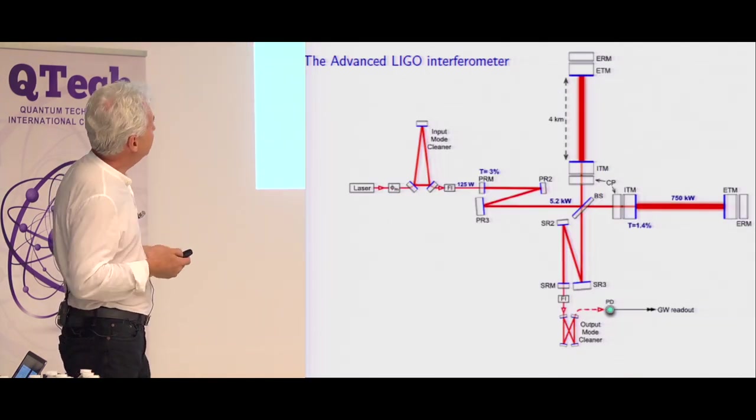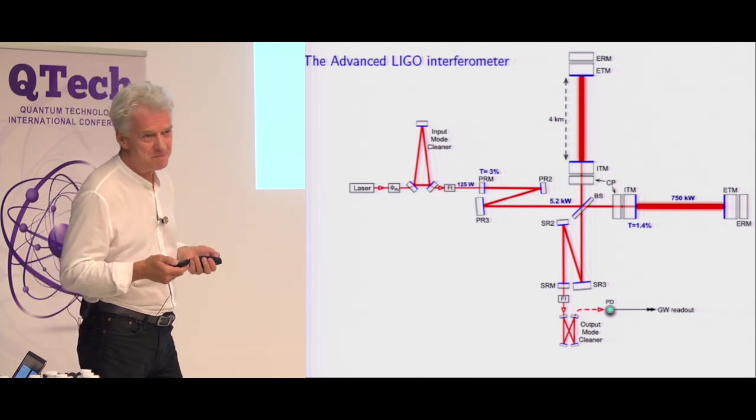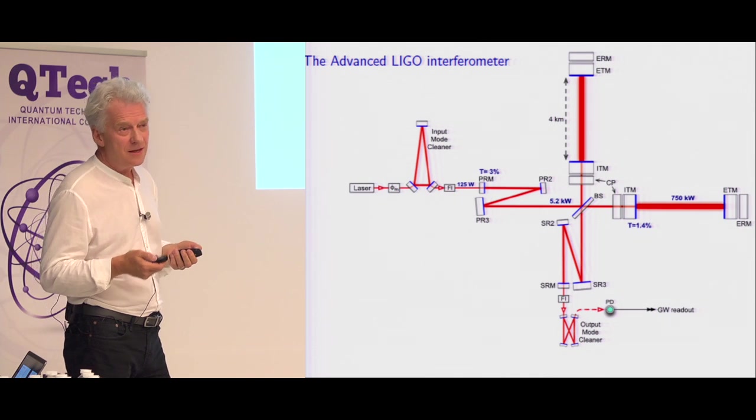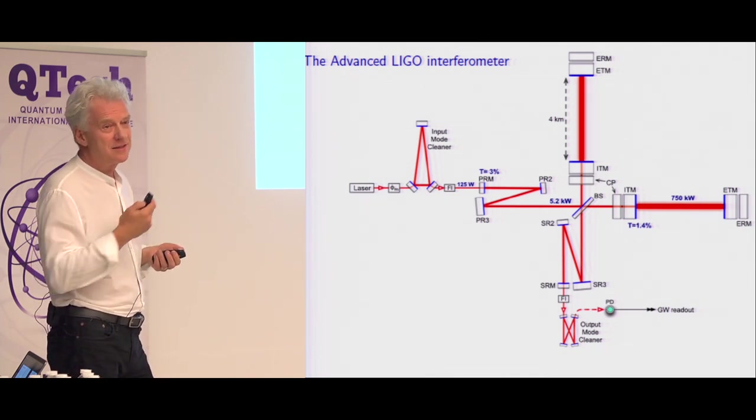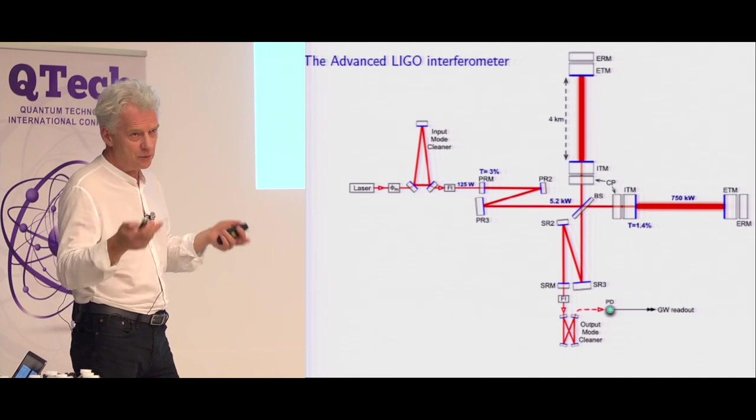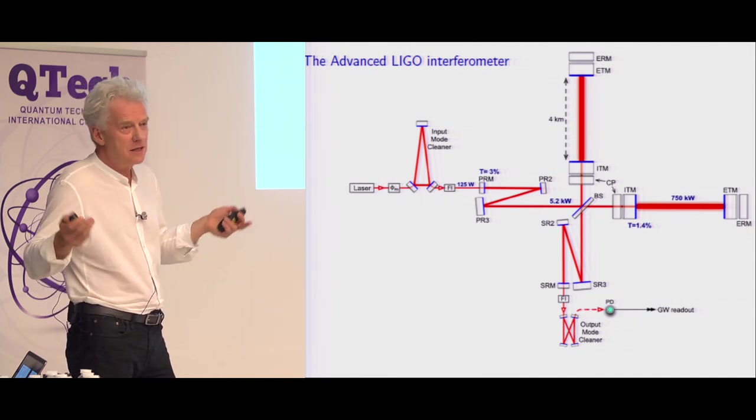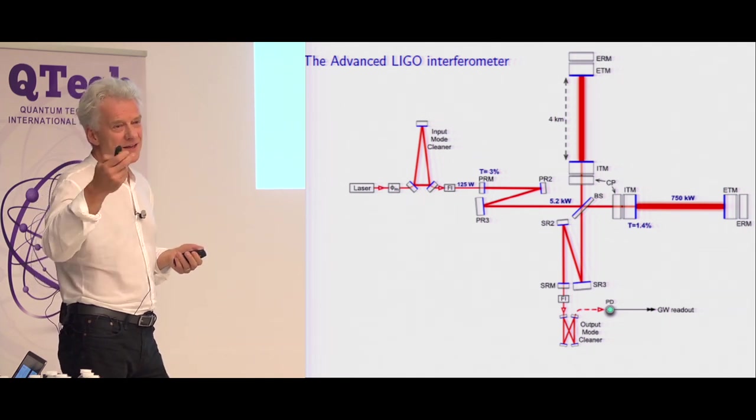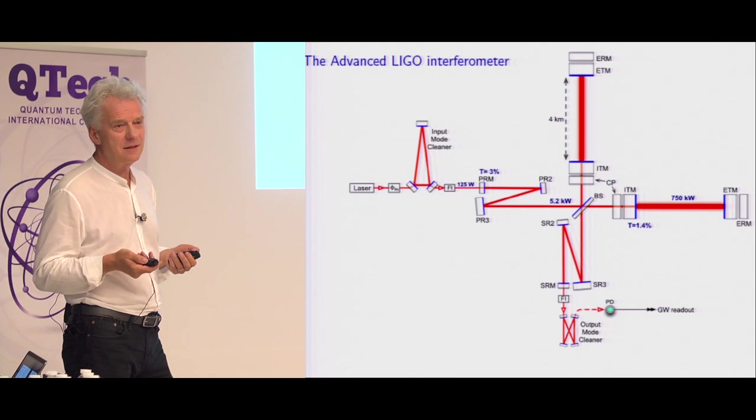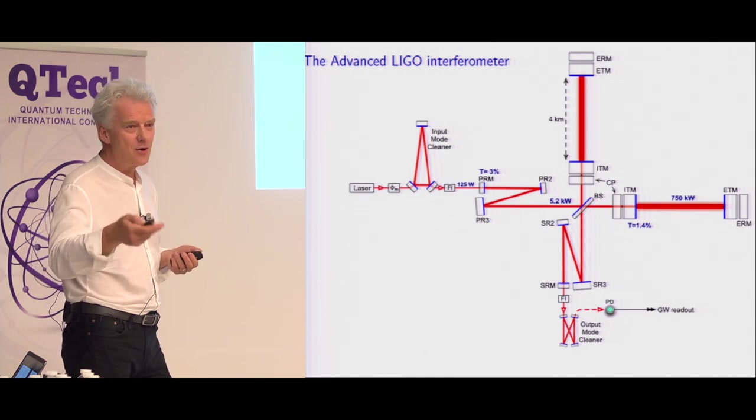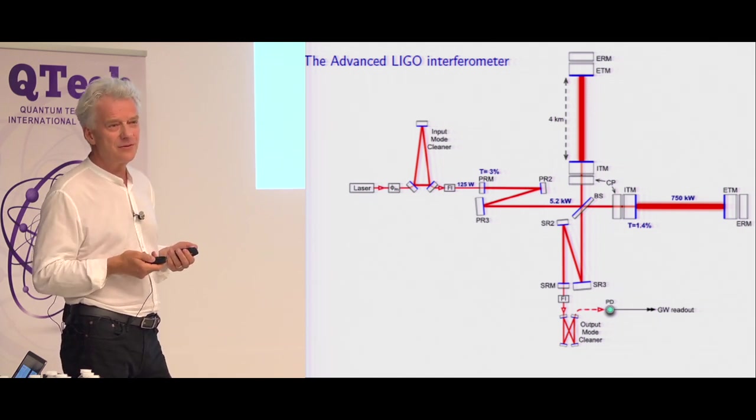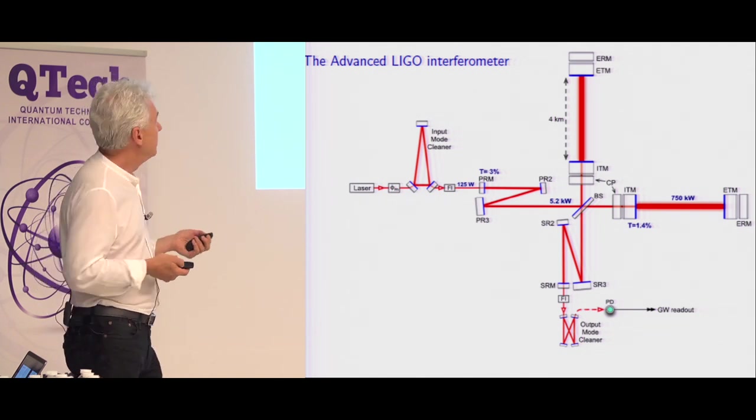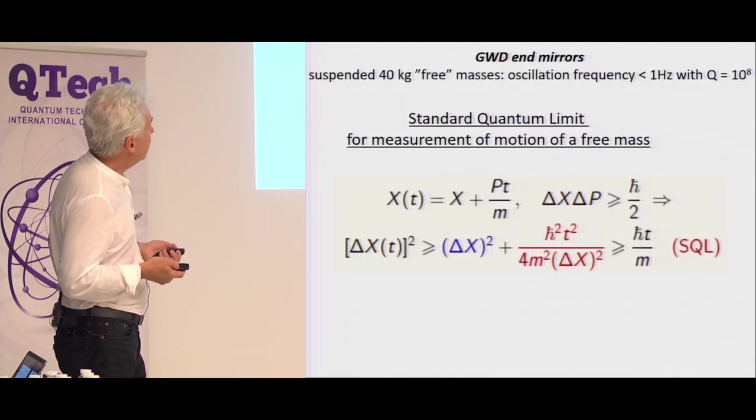So this is the LIGO interferometer. It's a complicated machine. And what we want to do is to apply the stuff that we have observed in the lab, that we have proposed and observed in the lab, that if you measure the position of an object in the reference frame of the atomic spin oscillator, then you can go beyond the quantum limits of sensitivity because you can reduce the quantum back action of the measurement.